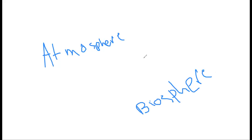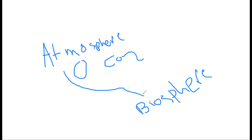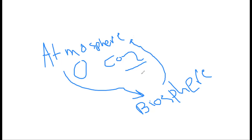Notice that gases like oxygen and carbon dioxide go from the atmosphere to living things. Plants take in carbon dioxide for photosynthesis, and all organisms take oxygen for breathing. These gases go back to the atmosphere when living things release them — for example, when plants make photosynthesis, they release oxygen.